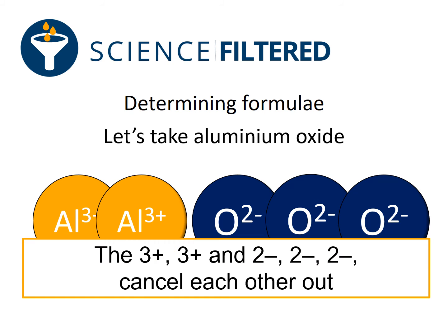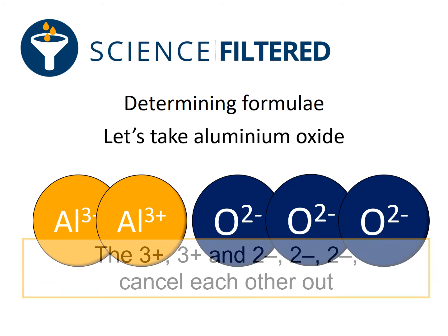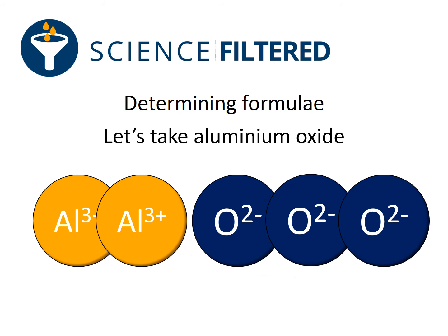So I just need to keep adding until the charges balance. If I add another oxygen with a two minus on it, now I've got three plus, three plus, and the two minus, two minus, two minus cancel each other out. So the formula for aluminium oxide is Al₂O₃.